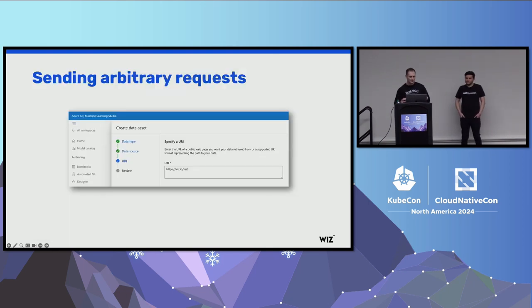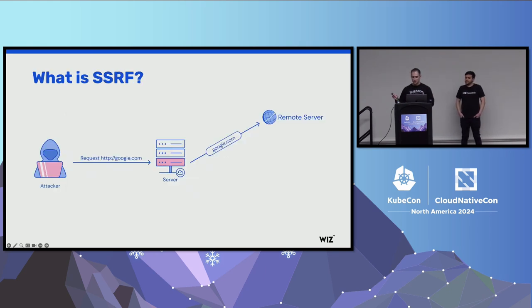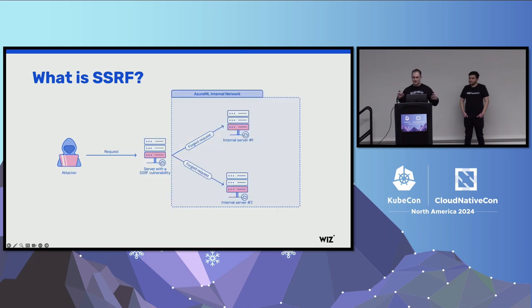Not too long after we started browsing the Azure ML portal, we landed on a page with a feature that allows customers to fetch remote datasets. You just supply an arbitrary URL, and in return, Azure will send a request from their servers to that remote server and preview the response. After a few minutes of playing with this feature, we realized that this URL is not sanitized nor validated, basically introducing a server-side request forgery vulnerability.